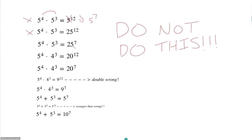Another mistake: 5 to the 4th times 5 cubed equals 25 to the 7th — here the powers were correctly added, but then the bases were multiplied, which spoils everything. With different bases, like 5 to the 4th times 4 cubed, you cannot multiply the bases together and multiply the powers, nor can you multiply the bases and add the powers — in order to add powers, you need the same base. One wrong version had 9 to the 12th as the answer, which involved adding the bases and multiplying the powers — essentially making everything up.